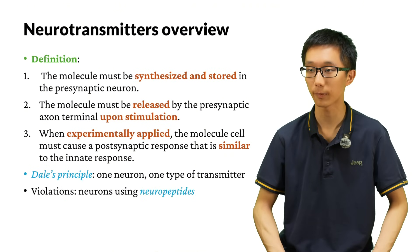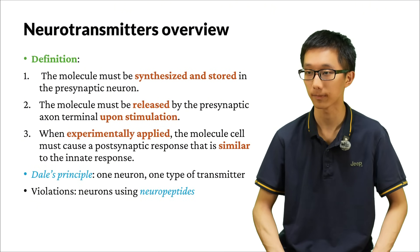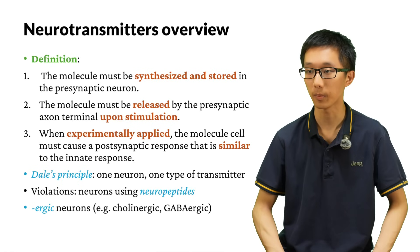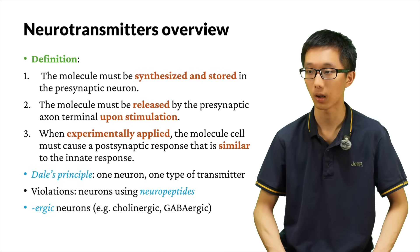However, there are some violations, especially in neurons that use neuropeptides. Certain neurons that use neuropeptides also have a small molecule neurotransmitter as their transmitter. Because of Dale's principle, we are able to name neurons according to the type of neurotransmitter that they use — we call these what-ergic neurons. For example, neurons that use acetylcholine are called cholinergic, neurons that use GABA are called GABAergic, neurons that use glutamate are called glutamatergic, and so on.